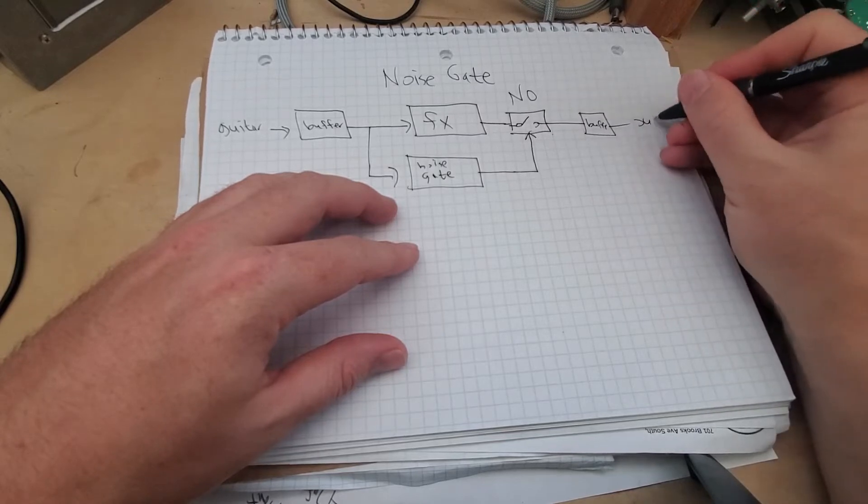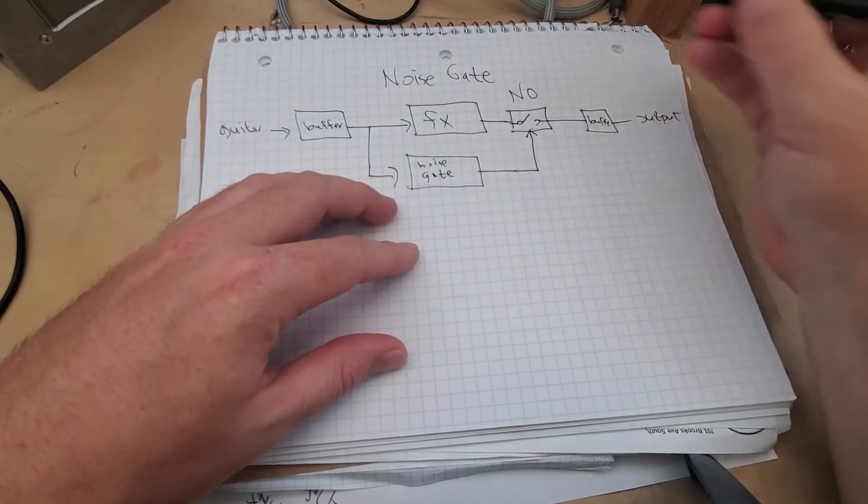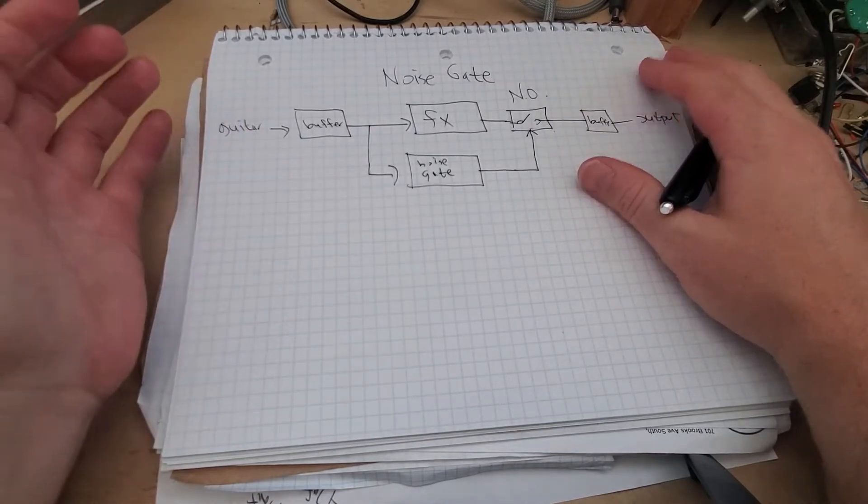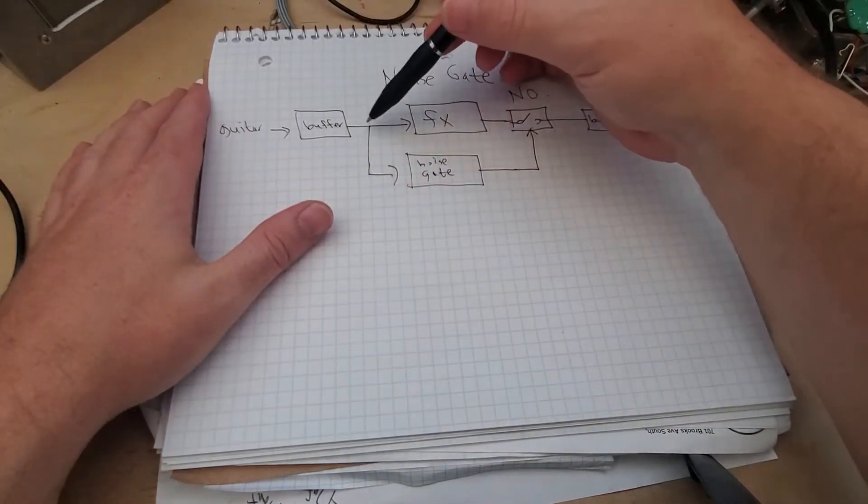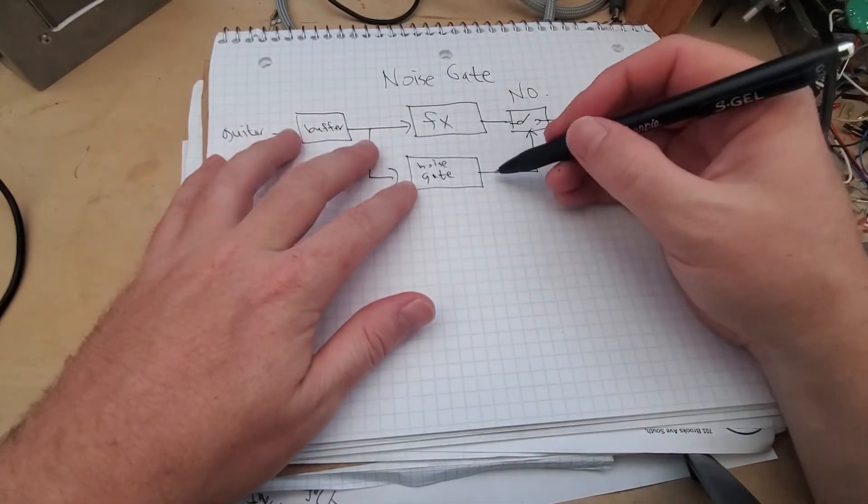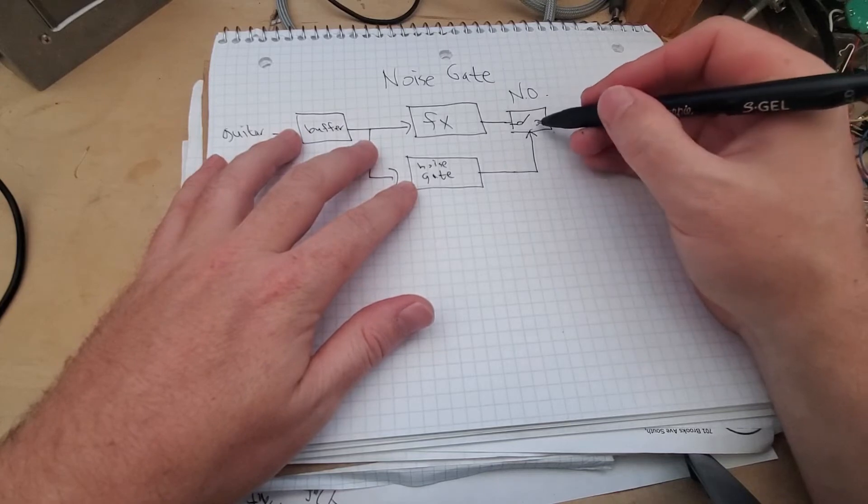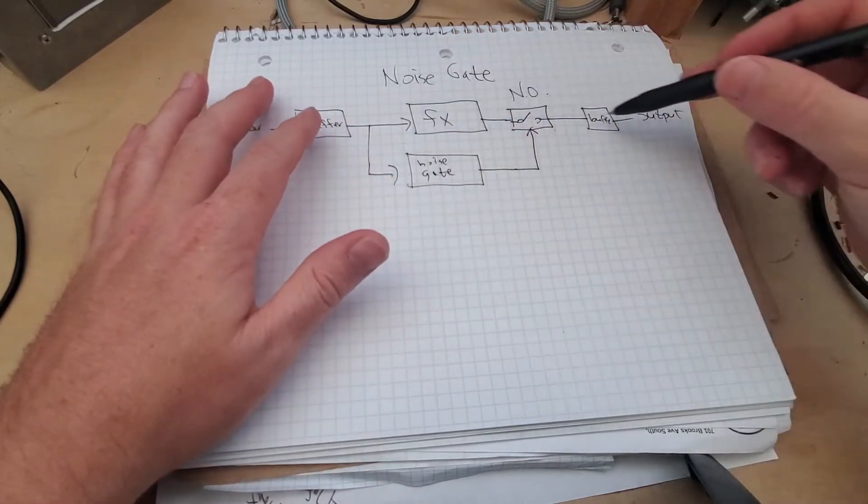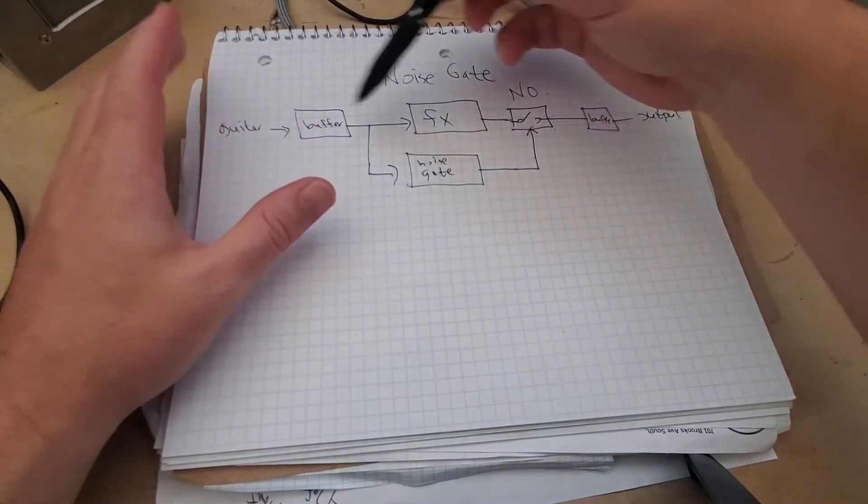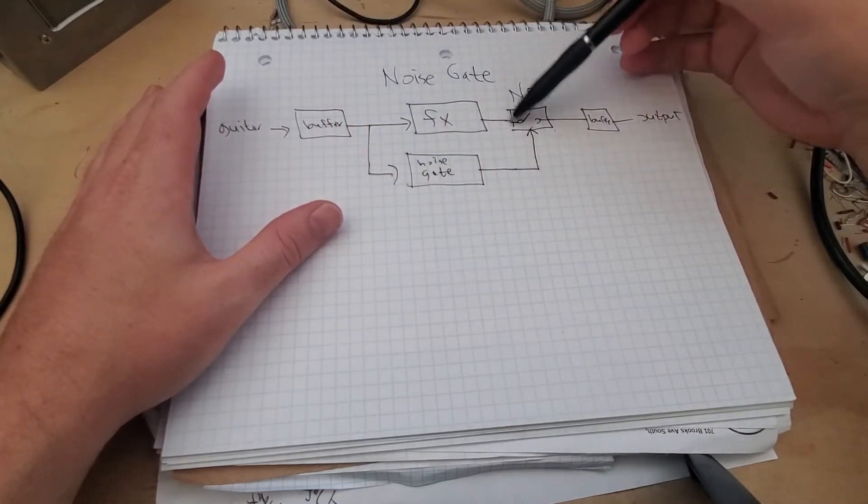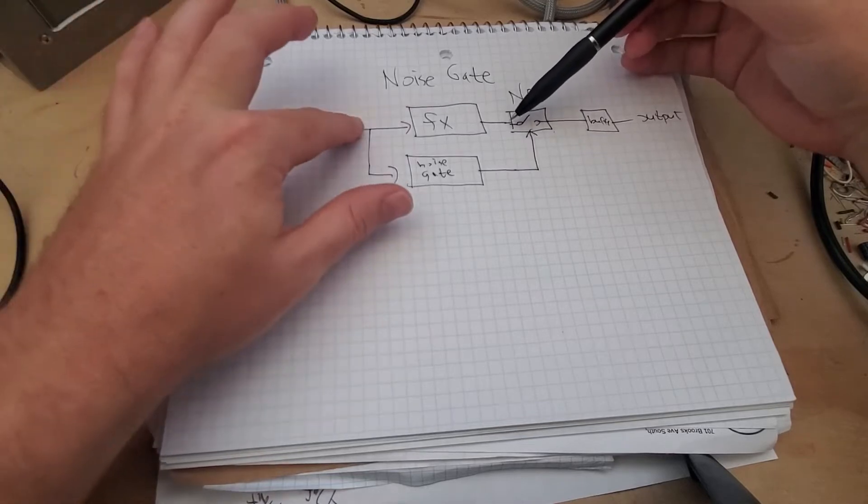The whole idea that I came up with was if your guitar is strummed, the noise gate detects that it's being strummed and decides to close this switch and allow signal to pass through. If it's not strummed, this switch opens and allows no signal to pass through. So you can have this big noisy circuit coming in right here and there's nothing getting past this point until the guitar is strummed, which triggers this noise gate and tells this switch to close.